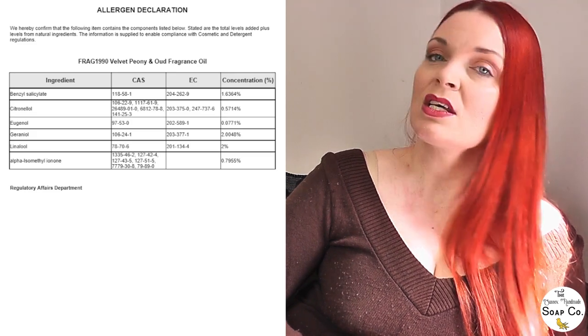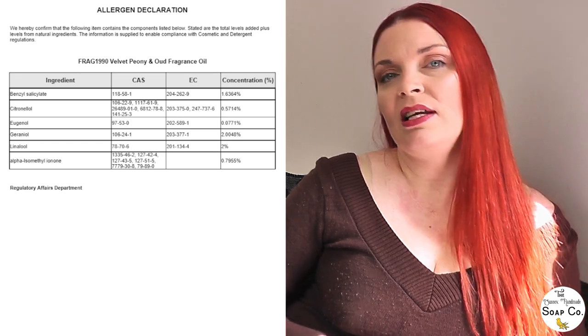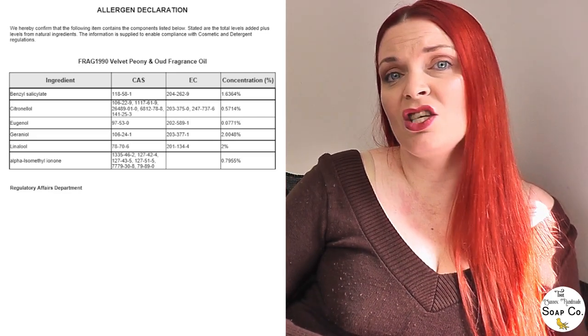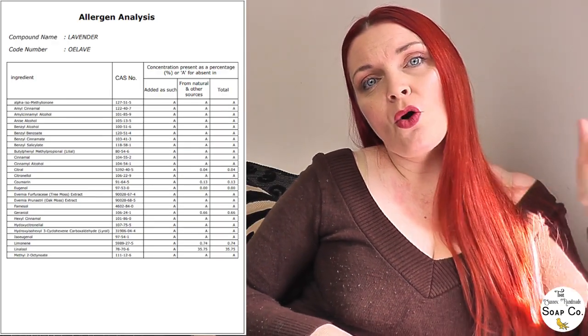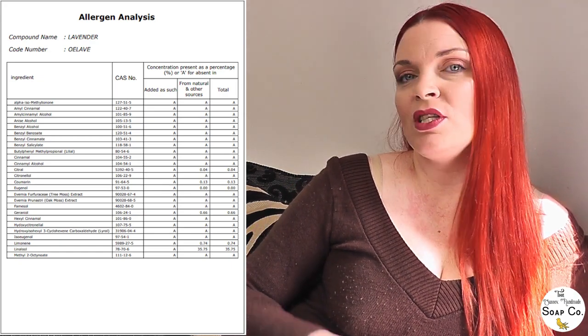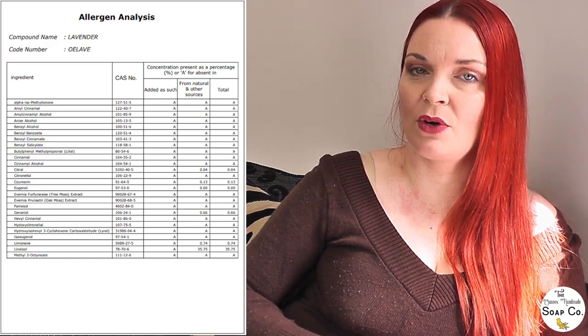Some allergen documents, like this one for the Velvet Peony and Oud scent, only show the allergens that are actually present in the fragrance — they won't list every single allergen with a zero if they're not present. This document for a lavender essential oil shows all 26 allergens, putting an 'A' for absent next to the ones not present and listing percentages for those that are. Either way is fine, so long as you have details of what allergens are in the oil and at what level.